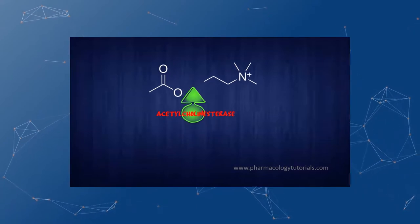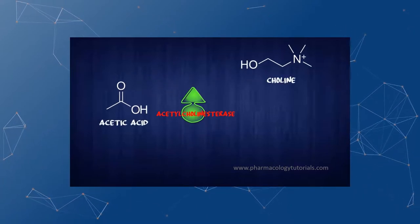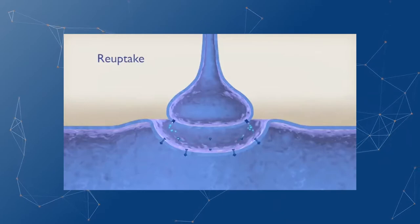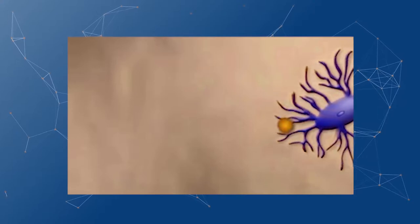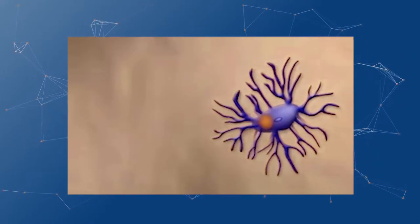These neurotransmitters can either be destroyed by enzymes in the synaptic cleft, be taken back into the presynaptic axon terminal by a process called reuptake, or detached from the receptor drifting out into the synaptic cleft where it will be absorbed by glial cells.